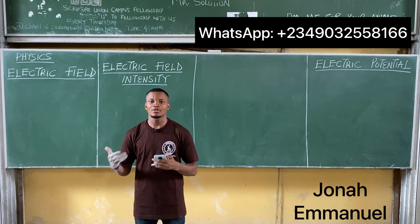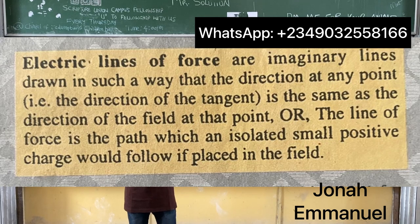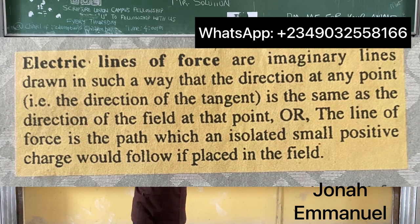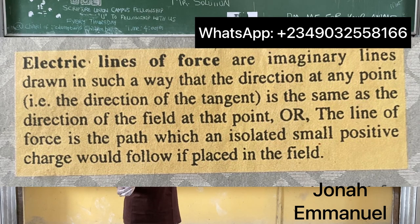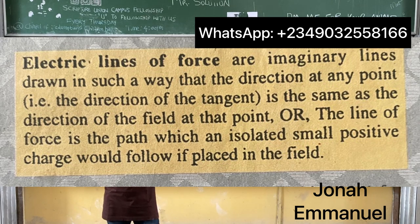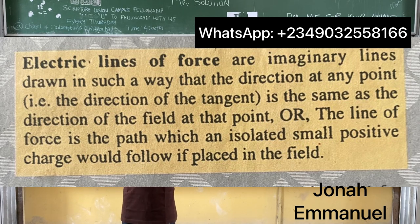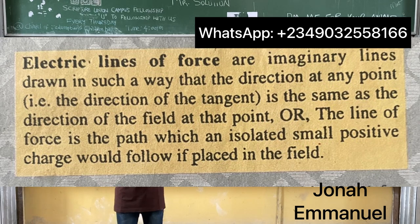Now what are electric lines of force? By definition, electric lines of force are imaginary lines drawn in such a way that the direction at any point — that is the direction of the tangent — is the same as the direction of the field at that point. We can also define electric lines of force as the path which an isolated small positive test charge would follow if placed in the field.